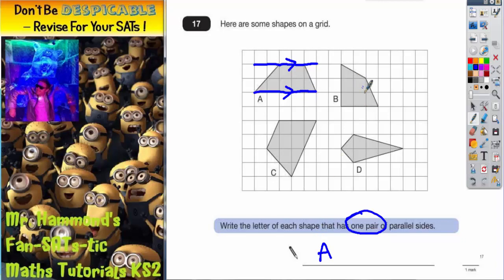Shape B doesn't have any pair of lines that are parallel. For example, if you try to do a similar thing with that side and that side and extended it, you would see that the two sides are going towards each other. Therefore, they are not parallel. So we can't include shape B. We can include shape A, but we can't include shape B.